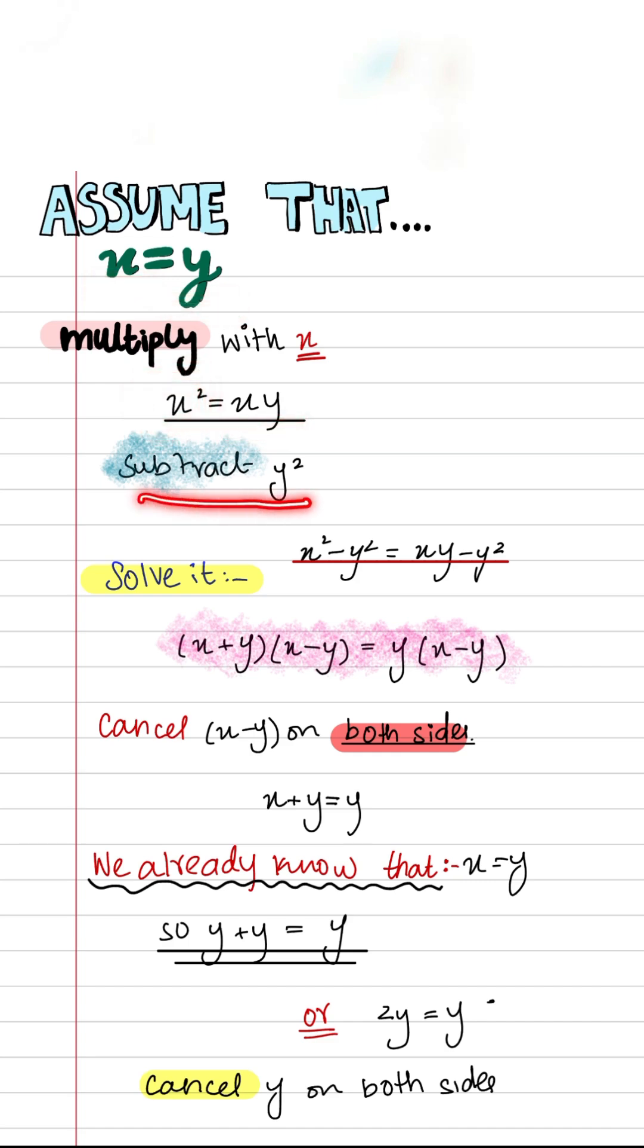Subtract y squared on both sides of the equation, so x squared minus y squared equals xy minus y squared. Now we know that x squared minus y squared is equal to (x+y) into (x-y).